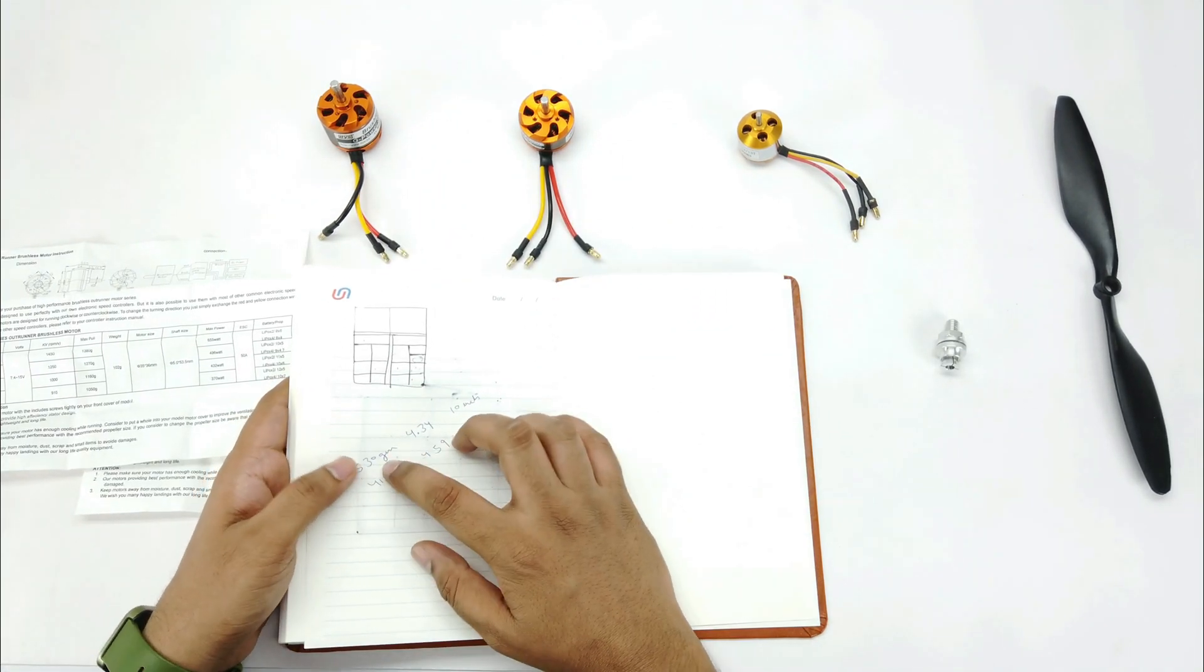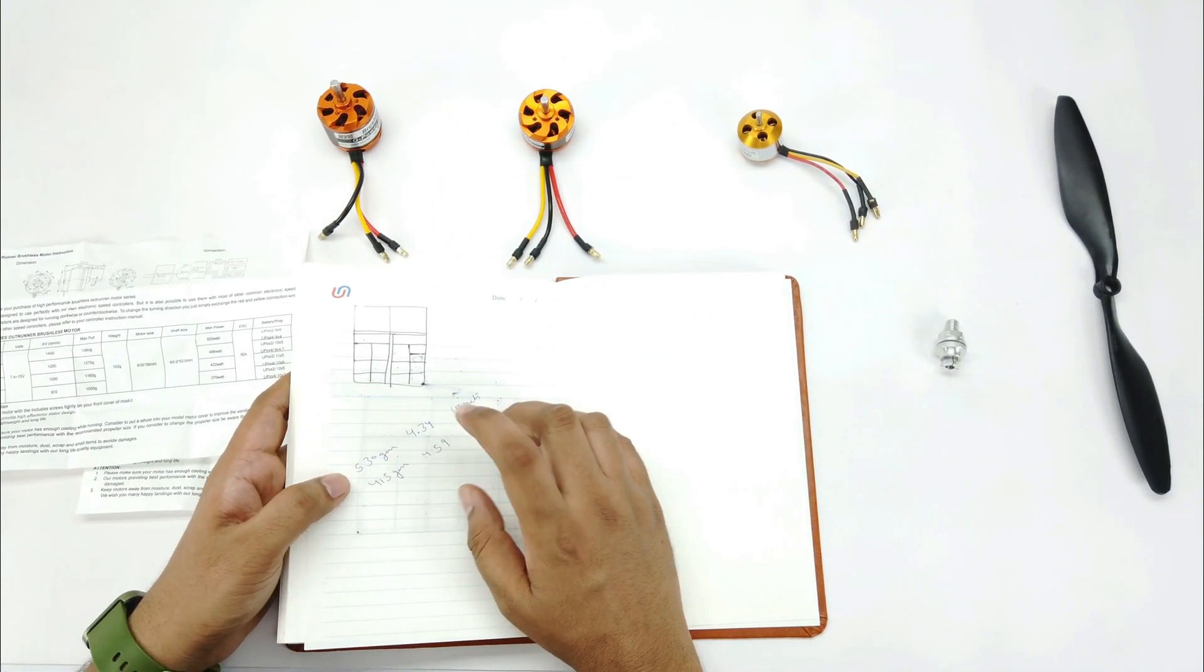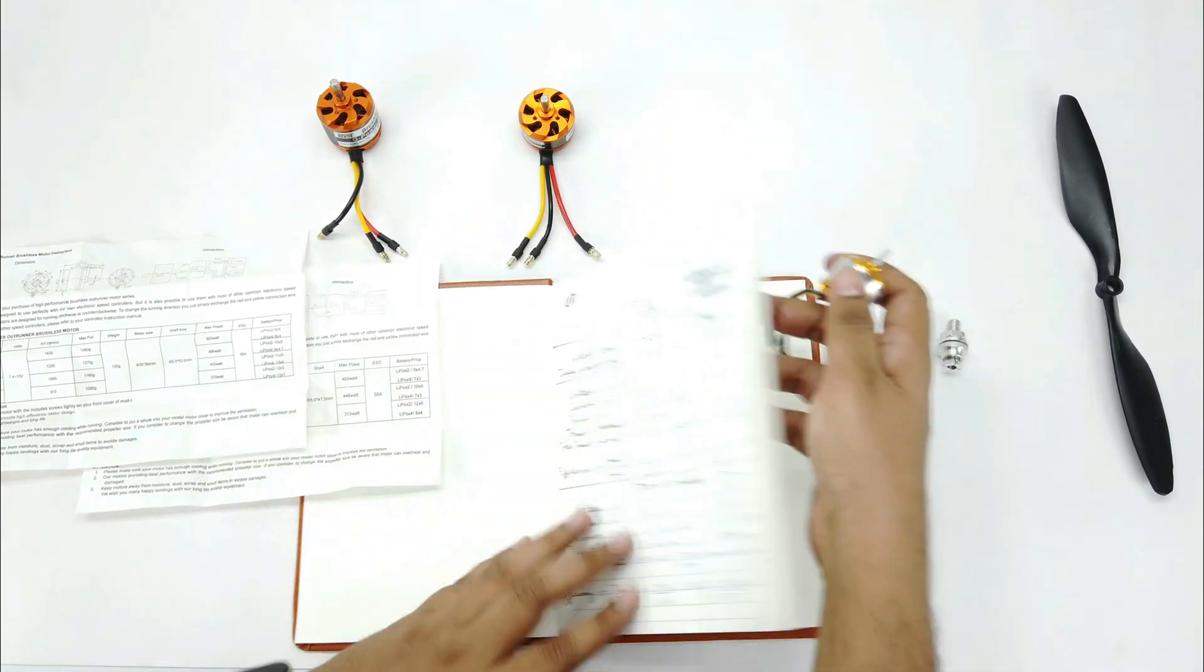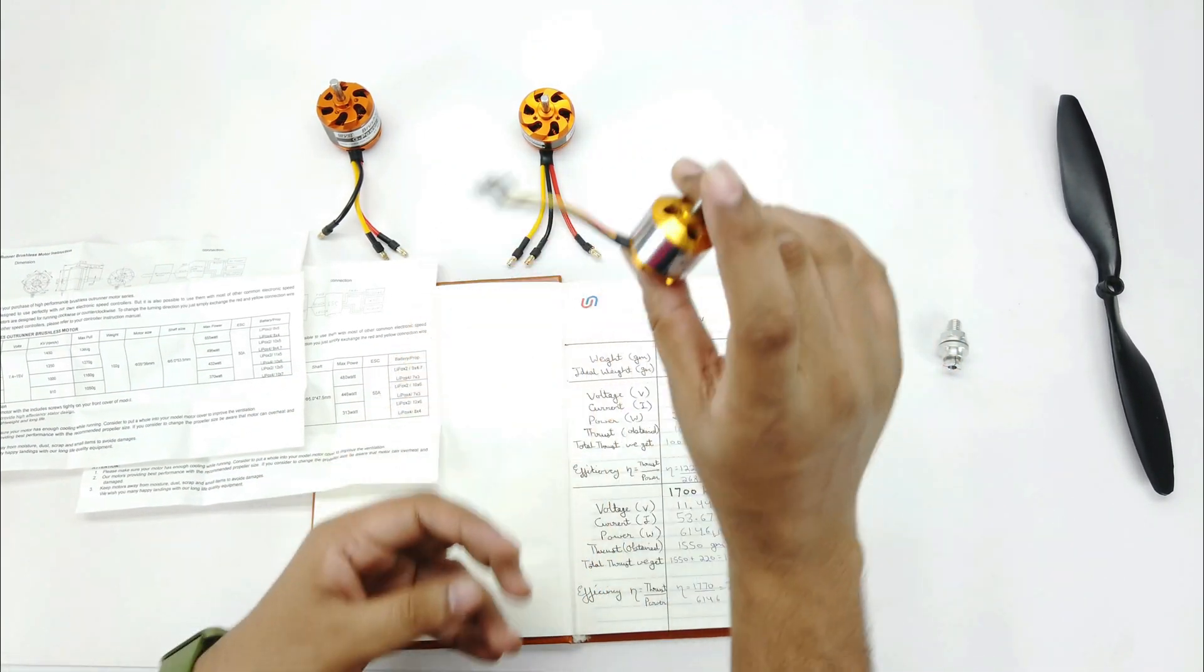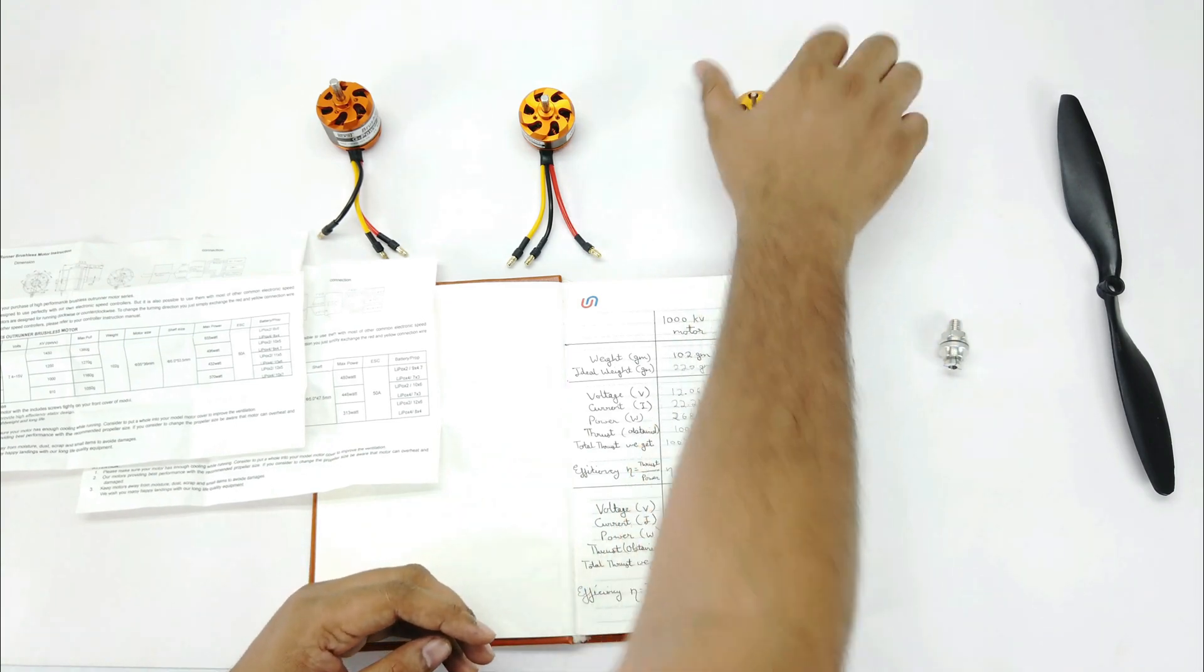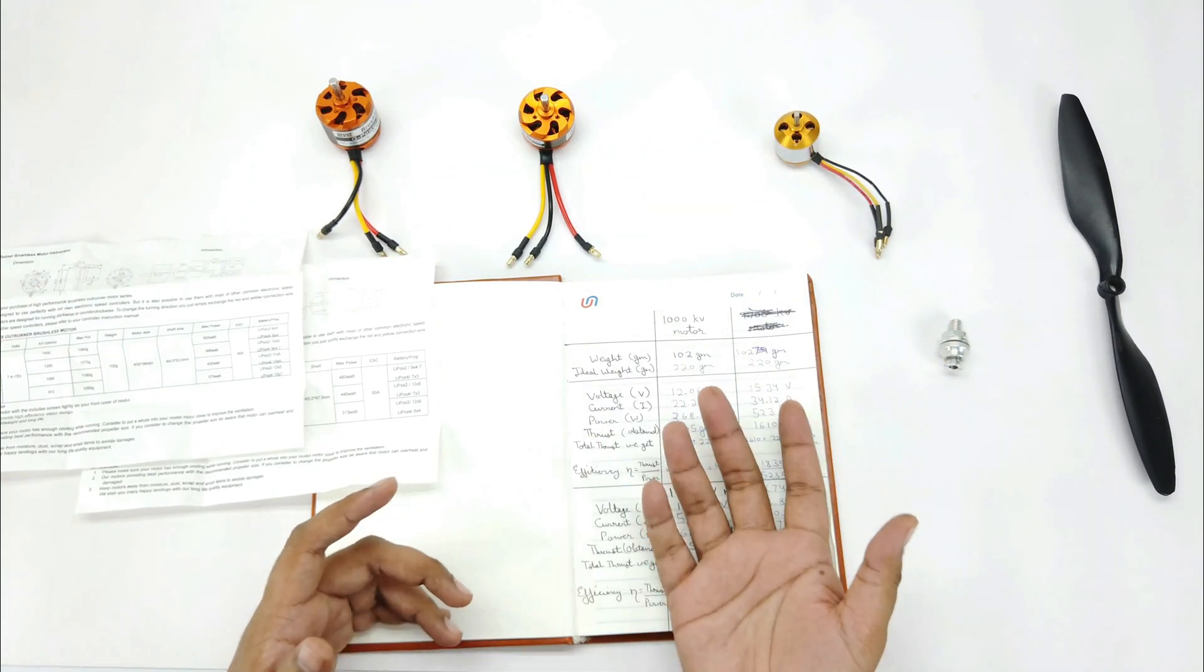And this A2212 motor gave only 500 grams of thrust. So I noted it here, it gives a thrust of 530 grams at an efficiency of 4.34 with 10 inch prop and efficiency of 4.59 with 8 inch prop. So it was most efficient at 8 inches. But what's the use of it when we didn't get that much thrust.